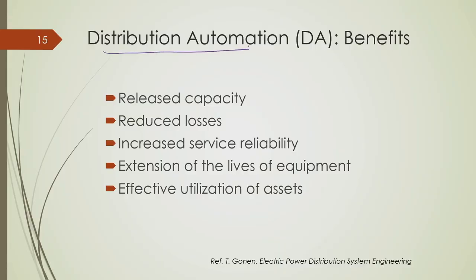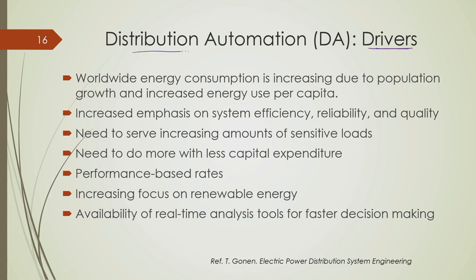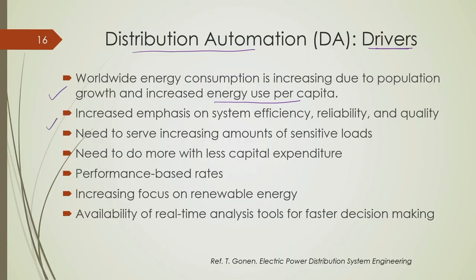The benefits of distribution automation for utilities include released capacity, reduced energy losses, improvement of reliability, extension of equipment lives, and effective utilization of assets. The drivers for distribution automation include increase in power demand worldwide, increased energy usage per capita, and the need for higher efficiency, reliability, and power quality. The equipment customers use has completely changed, whether lighting equipment or air conditioning systems.